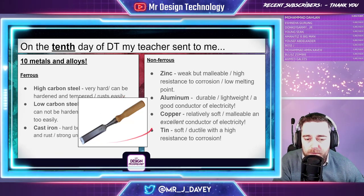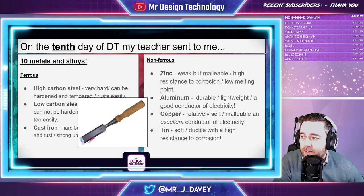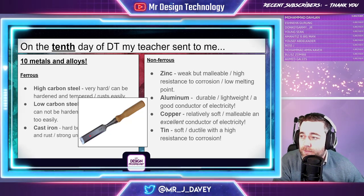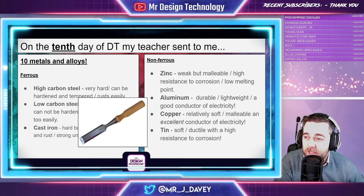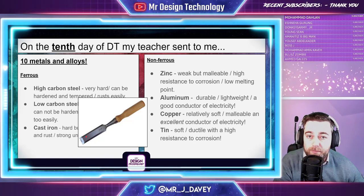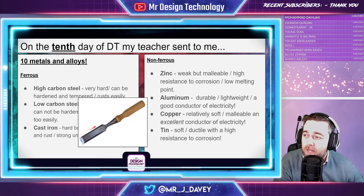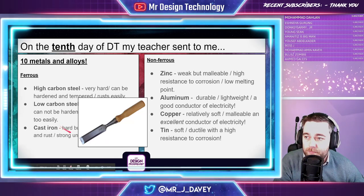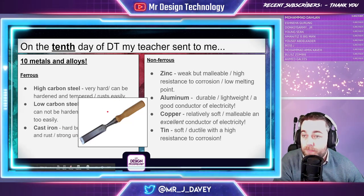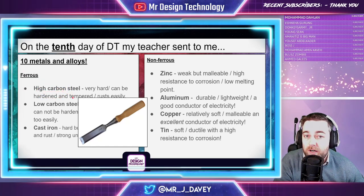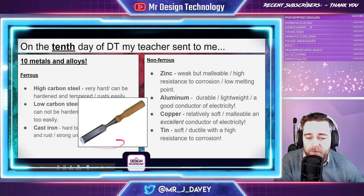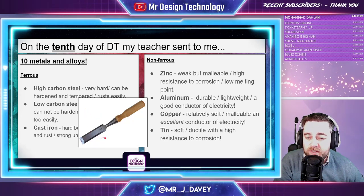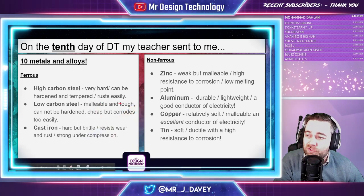High carbon steel is used for tools like chisels. Because of its high carbon content it's very hard — it has to be harder than the material it's cutting through, like oak hardwood. The more carbon it contains, the harder it gets, which is why it can be tempered to resist indentation. The downside is that it rusts easily, which is a main characteristic of ferrous metals.